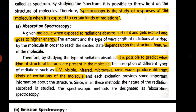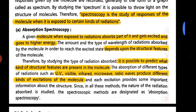Spectroscopy is generally of two types: absorption spectroscopy and emission spectroscopy. In absorption spectroscopy, whenever energy is bombarded on a molecule, it absorbs that energy, gets excited, and goes to a higher energy level. The type and wavelength of radiation absorbed by the molecule to reach the excited state depends on the structural features of the molecule — particular functional groups, particular structures, or rings present — causing the molecule to respond in a particular manner.